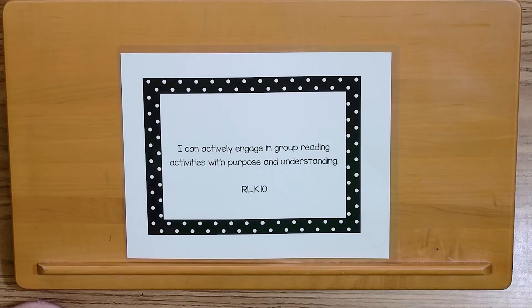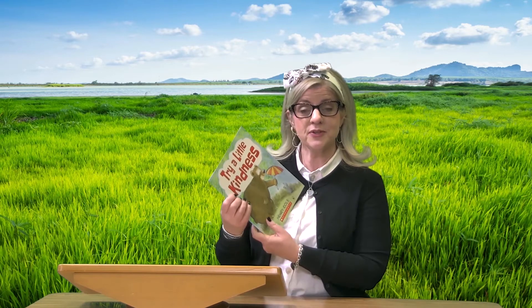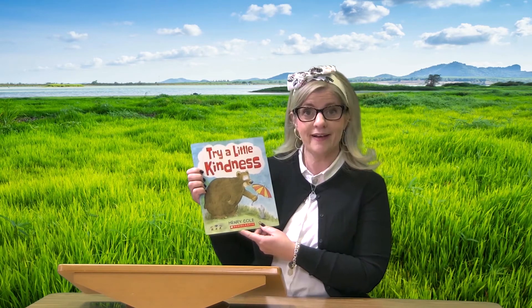I am very excited to share our standard with you today. It says: I can actively engage in group reading activities with purpose and understanding. That is a great standard because basically it says that when we're reading with other people or listening to somebody read, we're paying attention and using our thinking skills to develop ideas about what the book is about. You might remember that I did a kindness activity with you recently. Today we're going to read a book that's very similar to that called Try a Little Kindness. Let's go ahead and start reading this book.